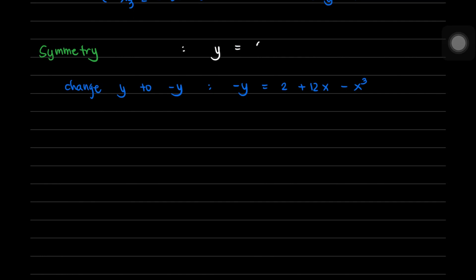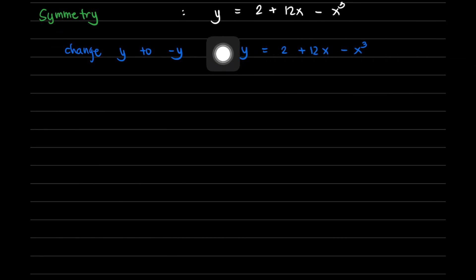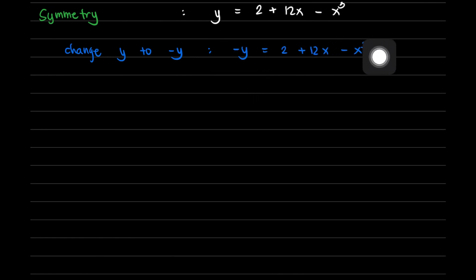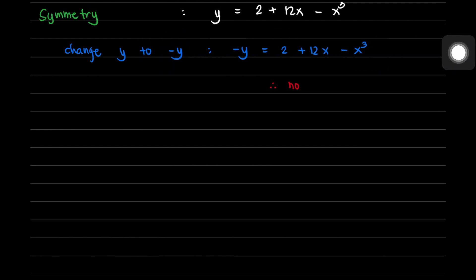Comparing the resulting equation to the given function y equals 2 plus 12x minus x cubed, there is a change in value because negative y is not the same as positive y. Therefore, this test failed — there is no symmetry with respect to the x-axis.